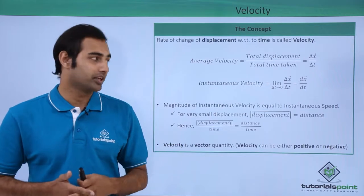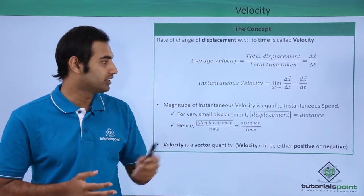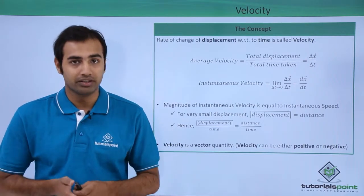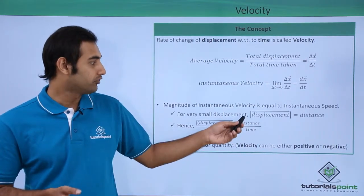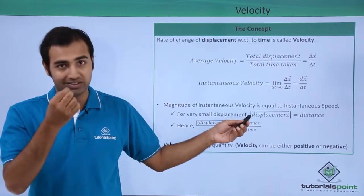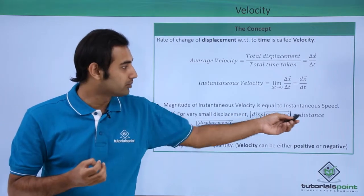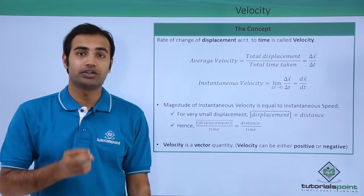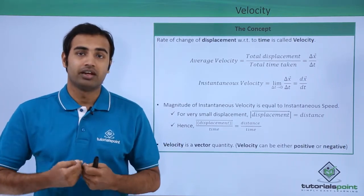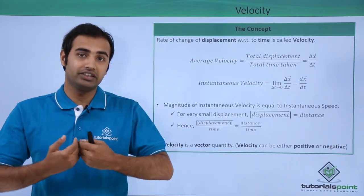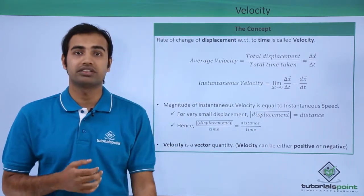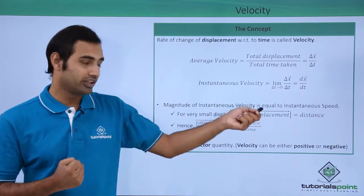Another interesting thing is that the magnitude of instantaneous velocity is actually equal to instantaneous speed. Why is this happening? Because for a very very small change in time, a very small displacement will take place, and for that very small displacement I can say that the magnitude of displacement is equal to distance. The time is so small that the particle won't get enough time to change directions.